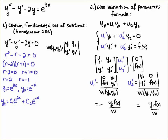To get u1 and u2, you integrate each of those expressions. All you need for variation of parameters are these two formulas: u1 equals the negative integral of y2·f(x) divided by the Wronskian, where the Wronskian is the determinant with the fundamental set of solutions in the first row and their derivatives in the second row; and u2 equals the integral of y1·f(x) divided by the Wronskian. Some people prefer to use Cramer's rule directly; others just grab the formulas.